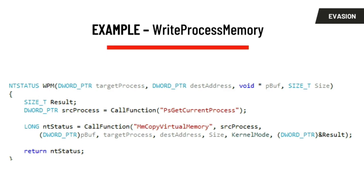The end effect is that you write your kernel mode implant in user mode, and each function call is basically an exploitation of the driver via the read-write primitive. This gives you user-mode code that can do things like write process memory without calling OpenProcess or any syscalls. You pass in the string of the function you want — PsGetCurrentProcess and MmCopyVirtualMemory were the ones needed for this specific implementation. With this you can inject into protected processes and evade detection by EDR and AV.